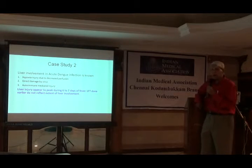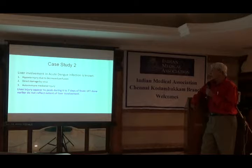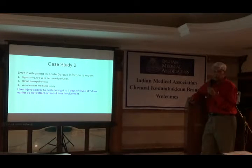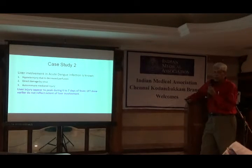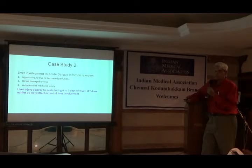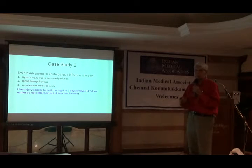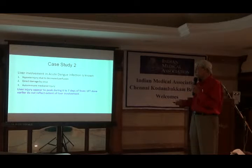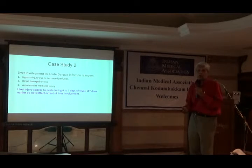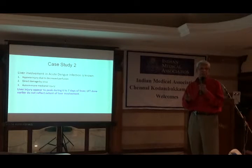So here we have another case — bilirubin remains normal, but AST/ALT are sky high. Treated with antispasmodics and antacids. After 4 days pain subsided, inflammation of the gallbladder reduced. By about 30 days, liver enzymes returned to normal. Liver involvement in Dengue is not uncommon. It may be due to hypoxic injury due to reduced perfusion, direct damage by the virus itself, or autoimmune-mediated injury. Liver injury appears to take about 5 to 6 days and may not be detected in the first week. Subsequently it comes out — it can appear a little late.